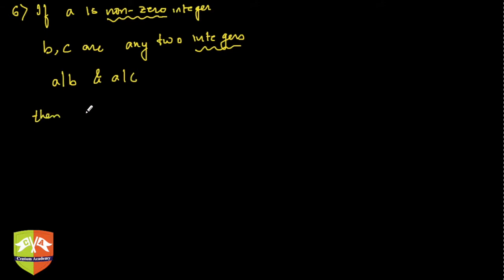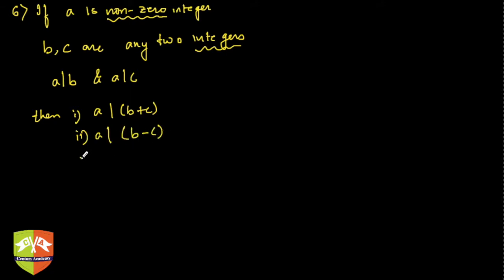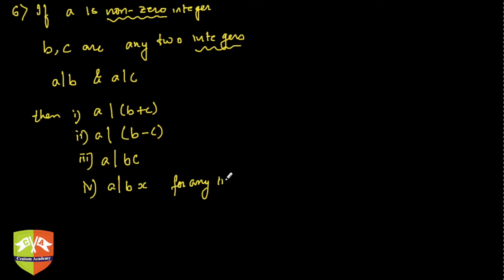The four results are: first, a divides b plus c; second, a divides b minus c; third, a divides b times c; and fourth, a divides b times x for any integer x. These are very vital properties.